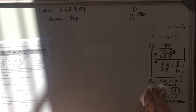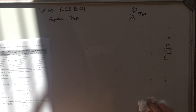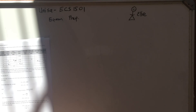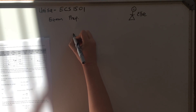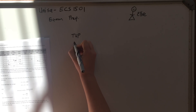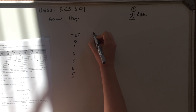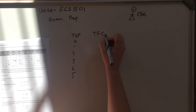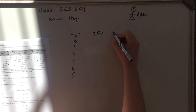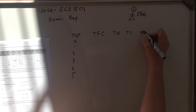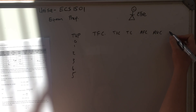That's on page nine if you want to review it. Last but not least, we're going to do one of these cost tables. We have total units produced: 0, 1, 2, 3, 4, 5. We have total fixed cost, total variable costs, total cost, average fixed cost, average variable cost, average...